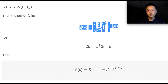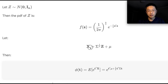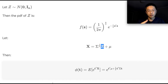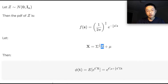Then let's define a random variable x — this is actually the multivariate normal. We define x to be the square root of sigma times z plus a constant vector mu. So x is a linear function of z.